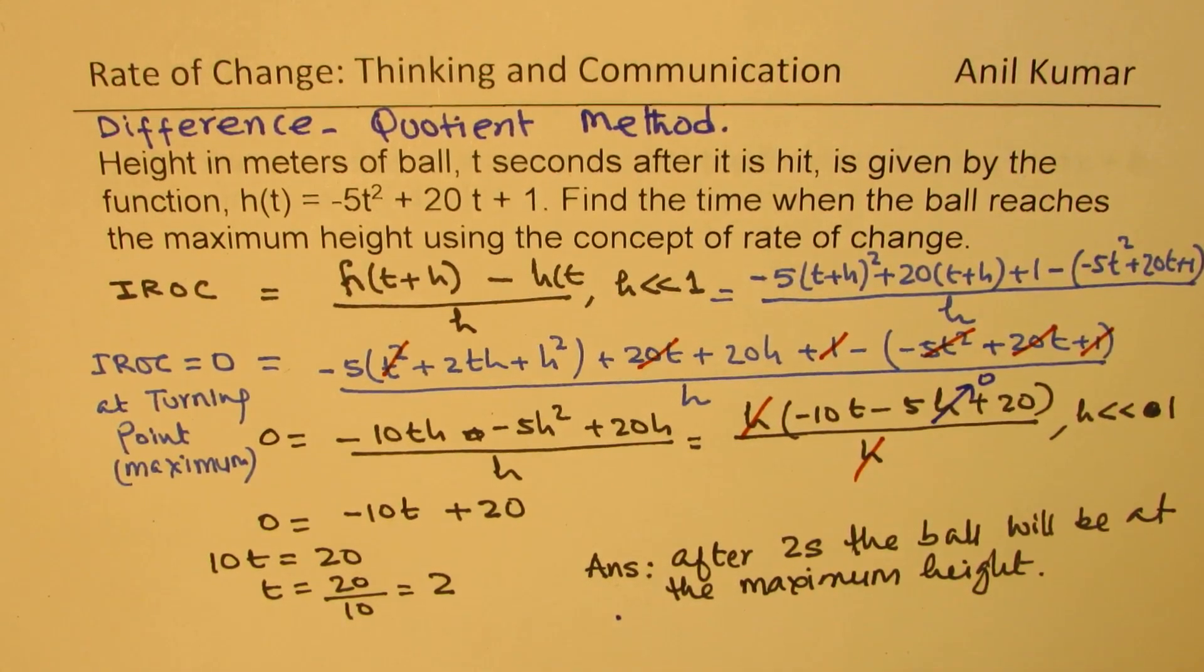Sometimes you may be required to find the height also. You can substitute 2 here and get your answer, right? So h(t) will give you the maximum height. But I hope overall, the method explains how do you find the point on the curve where there could be a turning point.